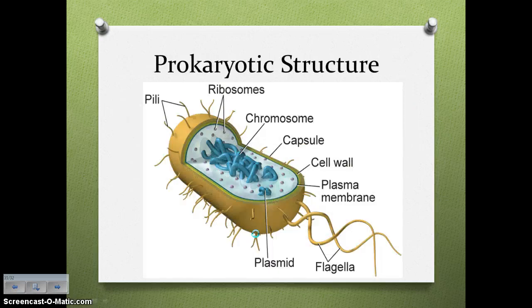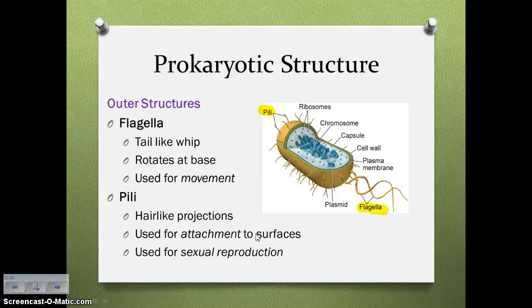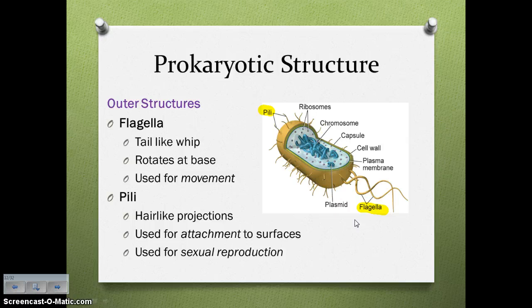Moving on to prokaryotic structure — use this picture to fill in number six on your notes organizer. Starting with the outer structures: you have the flagella and you have the pili. Flagella look like tails — they are tail-like whip structures that rotate at their base, propelling the cell forward. Their function is for movement. Pili are little hair-like structures all along the outside of the cell. Not all bacteria have all of these structures. Pili are used to attach the cell to various surfaces and for sexual reproduction — genetic information literally travels through the pili, allowing bacteria to exchange genetic information.